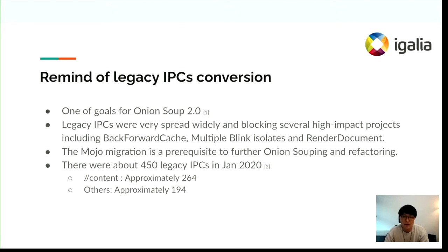So the Mojo communication framework was devised. It is well known that Mojo is about three times faster than the legacy IPC and requires one third less context switching compared to the old IPC in Chromium. We can also remove unnecessary layers like the content renderer to communicate between different processes, and easily connect interface clients and their implementations across arbitrary inter-process boundaries. Replacing the legacy IPC with Mojo is one of the goals for OnionSoup 2.0, and it is a prerequisite for further rendering performance improvements.